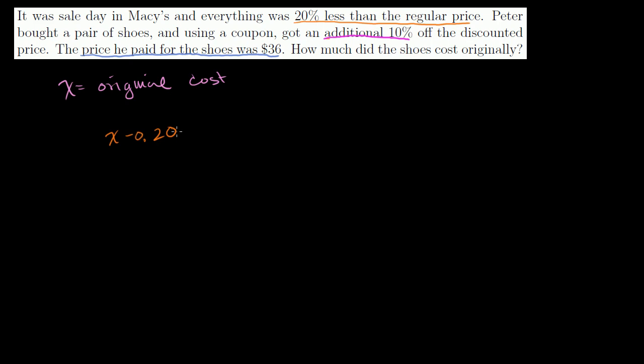or 0.20x, which is equal to 0.8x. Right? If you have 20% off of a price, you're going to be paying 80% of the original price. So this is the price that everyone would have paid without a coupon.